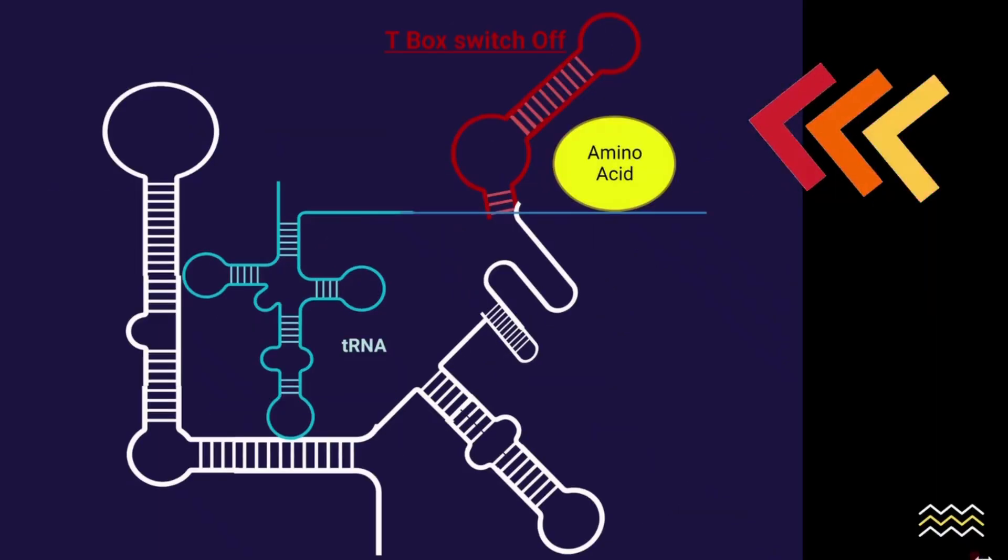If a t-box senses that a tRNA has an amino acid already on it, it sends a signal to the cell to stop making more of that amino acid available. This is one way that t-box switches work.